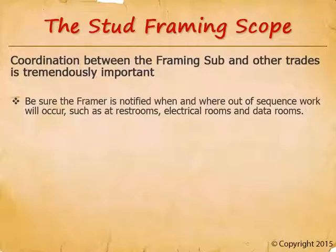There are two suggested ways of showing out-of-sequence work in bid documents: preferably on the project schedule, or if not detailed enough, in the bid instructions. The framing bidder needs to know all room numbers that must be constructed out of sequence. Otherwise, the framing subcontractor is unlikely to do this work without receiving a change order for it.